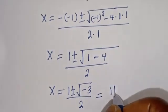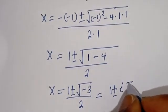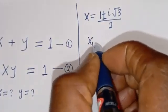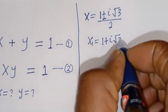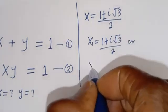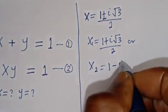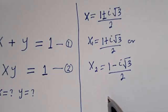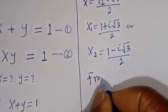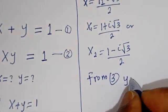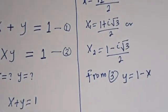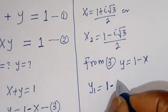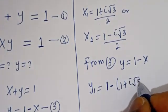This equals 1 plus or minus i square root of 3, divided by 2. Therefore, X1 is equal to 1 plus i square root of 3, divided by 2, and X2 is equal to 1 minus i square root of 3, divided by 2.